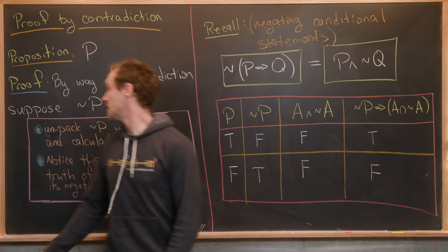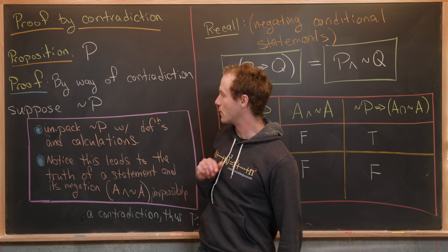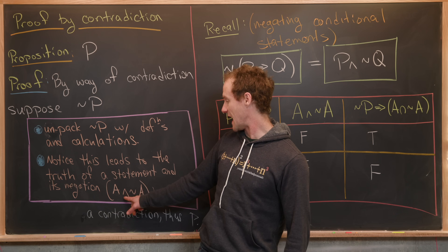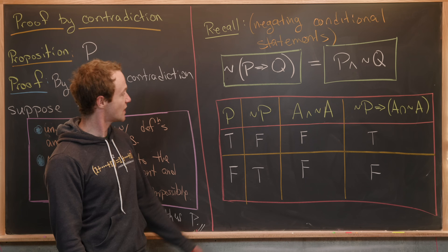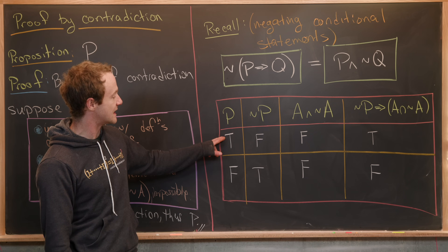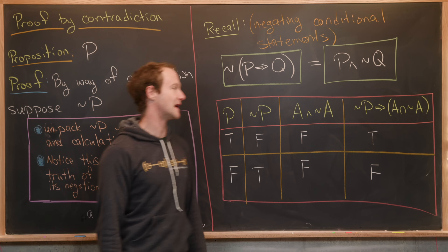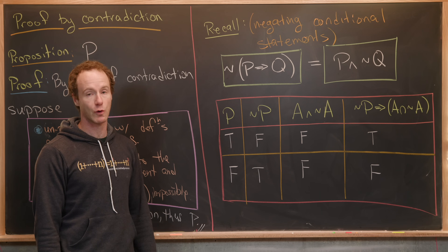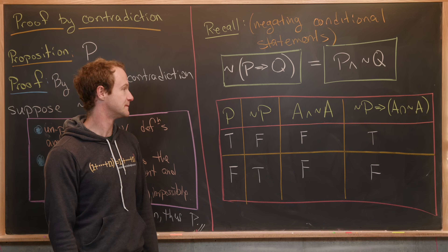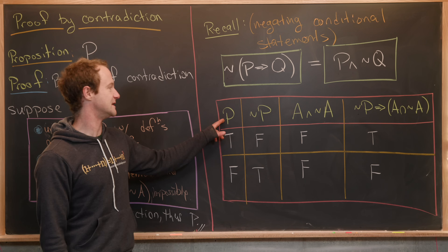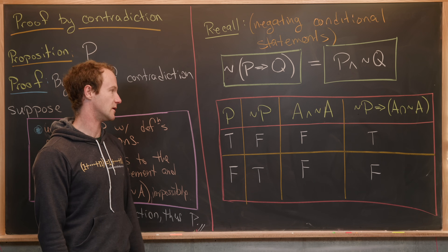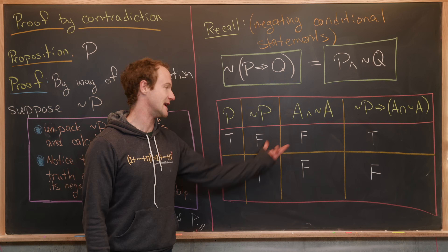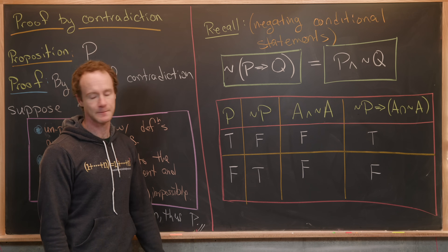Here's a truth table that explains why proof by contradiction works. In this proof, we have actually proven that 'not P implies A and not A.' Notice that the P column and the 'not P implies A and not A' column are identical, meaning those are equivalent mathematical statements. So if we've proven the latter, we've proven P as well. Note that 'A and not A' is always false, so there's really nothing more to it.